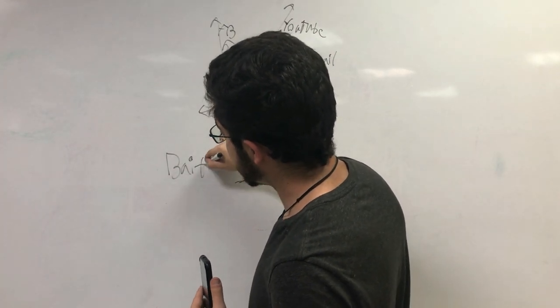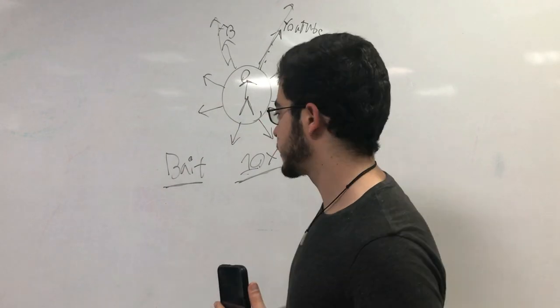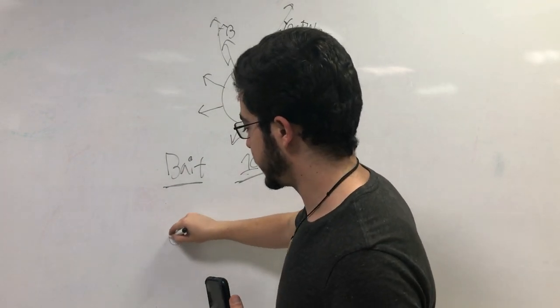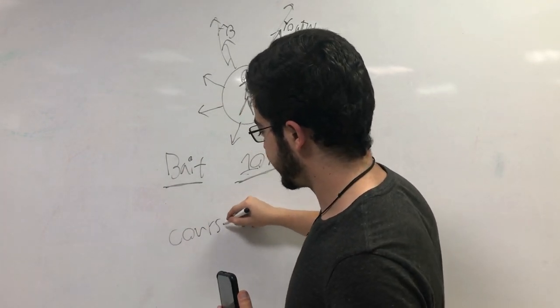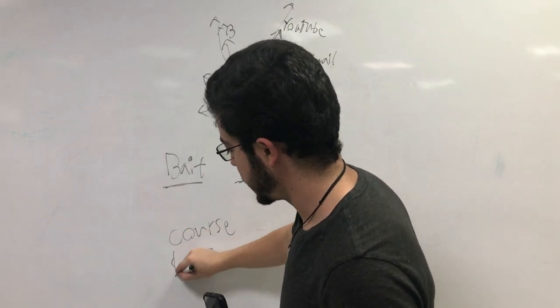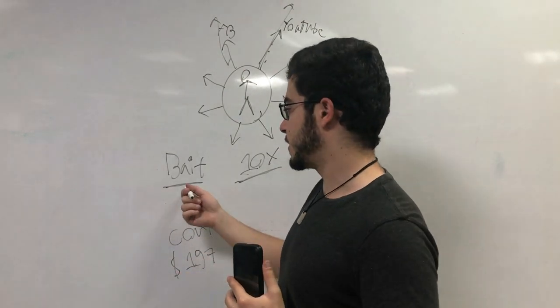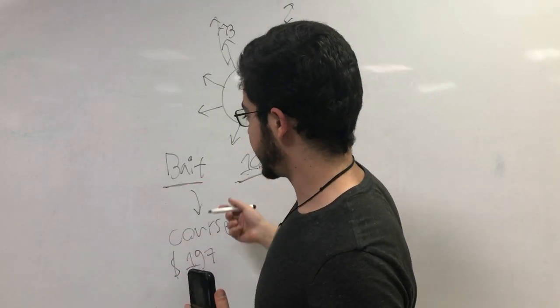A bait means you can create free value that is very much related to your product. So if I'm going to sell, let's say, an online course for $197 about YouTube marketing, I can bait people by giving them, for example,